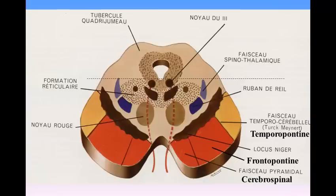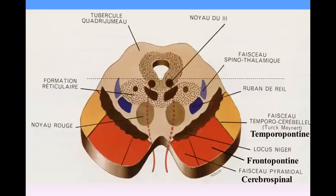The base (basis pedunculae, crusta or pes) is semilunar on transverse section and consists almost entirely of longitudinal bundles of efferent fibers, which arise from the cells of the cerebral cortex and are grouped into three principal sets: cerebrospinal, frontopontine, and temporopontine. The cerebrospinal fibers, derived from the cells of the motor area of the cerebral cortex, occupy the middle three-fifths of the base and are continued partly to the nuclei of the motor cranial nerves, but mainly into the pyramids of the medulla oblongata. The frontopontine fibers are situated in the medial fifth of the base and arise from the cells of the frontal lobe, ending in the nuclei of the pons. The temporopontine fibers are lateral to the cerebrospinal fibers, originating in the temporal lobe and ending in the nuclei pontis.